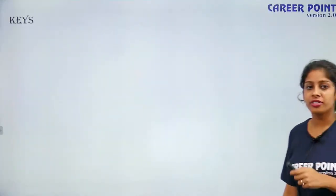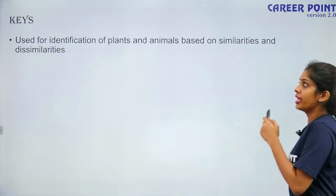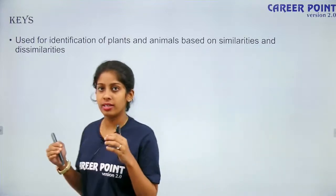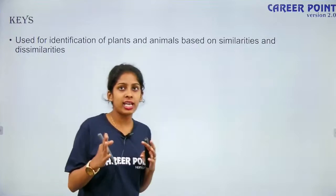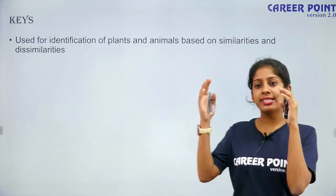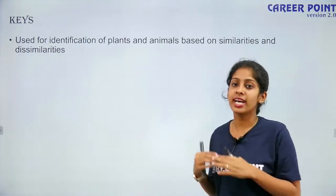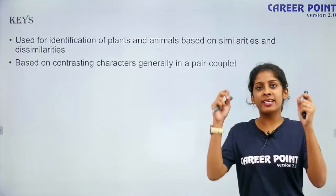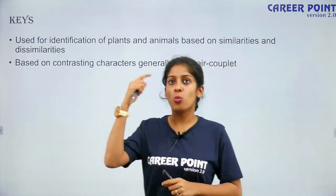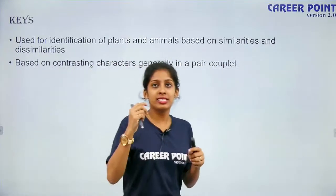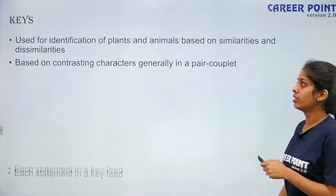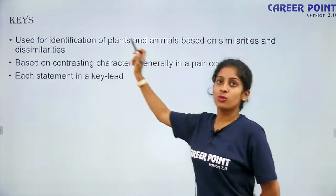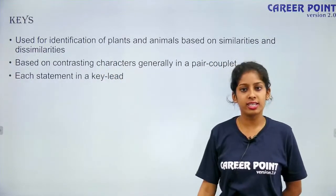Finally, one taxonomical aid is keys — used for the identification of plants and animals based on similarities and dissimilarities. Two plants might have similarities yet have differences. A key is based on contrasting characters generally in a pair — one statement contradicts the other, one is the opposite of the other. Since it comes in a pair, you call it a couplet. Each particular statement in a key is called a lead. You need to remember: what is a key, what is a couplet, what is a lead.